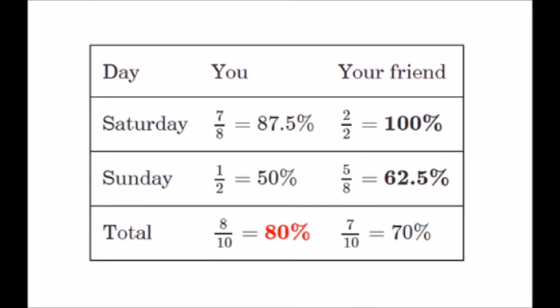On Sunday, you only attempted two problems and got one correct answer. Your friend got five out of eight problems correct. Your friend won once again because he got 62.5% marks and you got 50% marks. When you add both inequalities, you become surprised that you have got 80% whereas your friend got 70% marks. You can see that after adding the inequalities, the inequalities become inversed. Isn't it surprising?